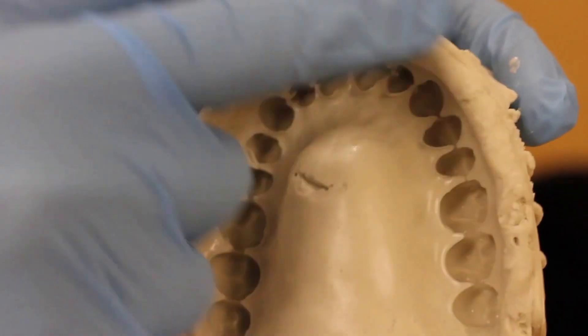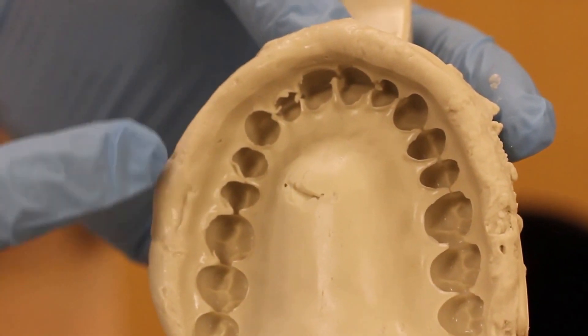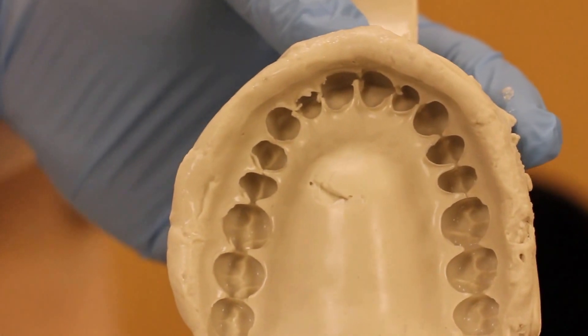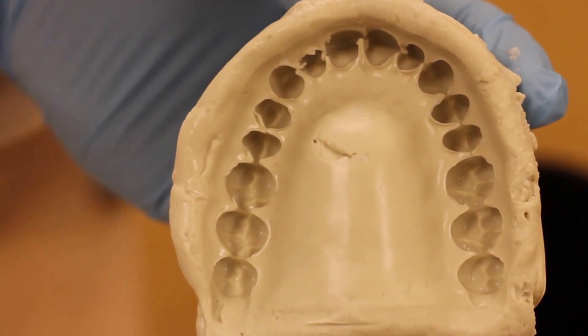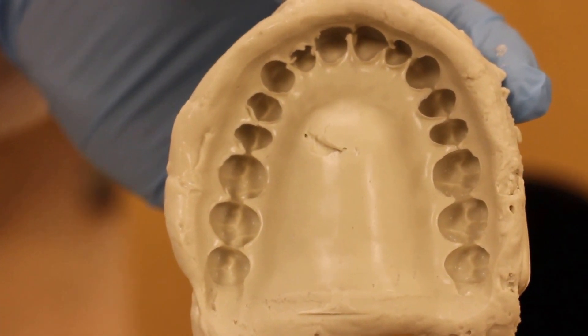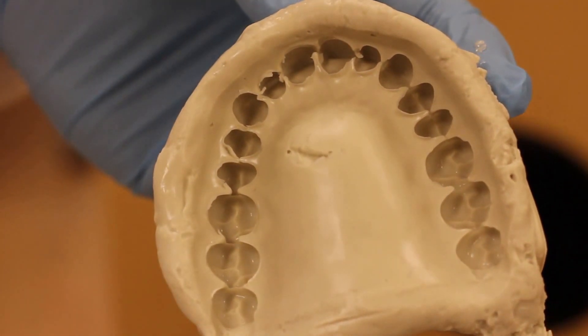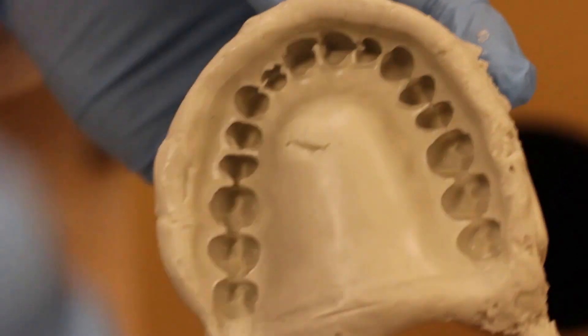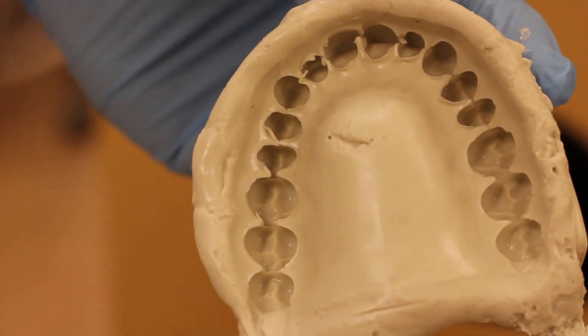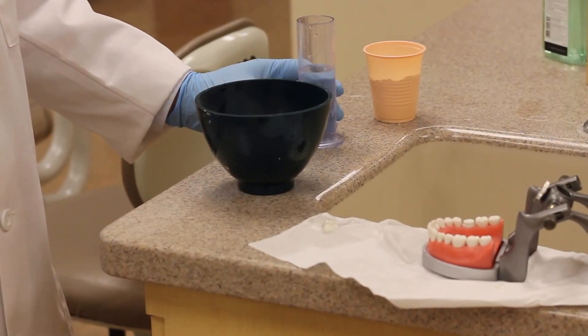Obviously the vestibule would be nice to capture but that's most critical for edentulous impressions because we often are making a custom tray to those vestibules, whereas a fixed impression you're most interested in the biting or occluding surfaces. Alright, so I want to show another example with the lower.